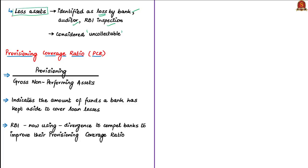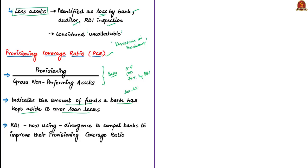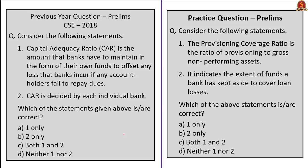There are variations in provisioning for the types of non-performing assets. According to the news article, for substandard assets provisioning has to be 15 to 20%, and for doubtful assets it has to be 40%. So when a bank declares NPAs in doubtful or loss categories, provisioning increases. The article also talks about the provisioning coverage ratio, which is the ratio of provisioning to gross non-performing assets. This indicates the amount of funds the bank must set aside to cover loan losses. It was earlier mandated at 70% by the RBI, but this mandate was withdrawn in 2011. Now, RBI is using the divergence tool to compel banks to improve their provisioning coverage ratio.